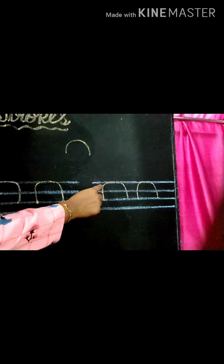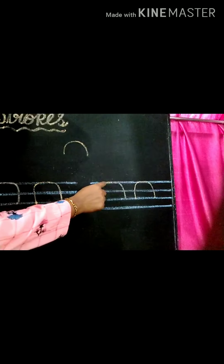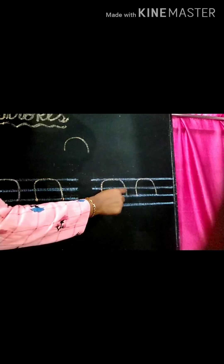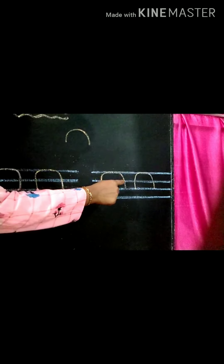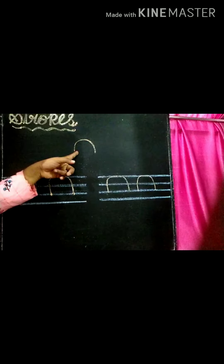Downward curve — start from the third line and stop on the third line. So children, what stroke is this? Downward curve. This stroke is called downward curve.